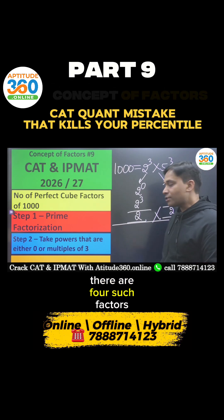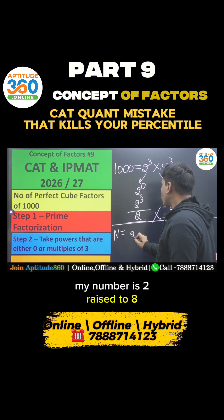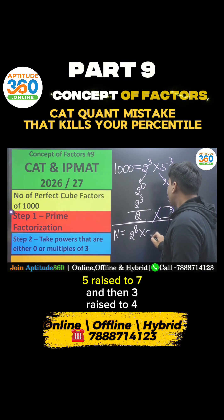Say I have got this number. My number is 2 raised to 8, 5 raised to 7, and then 3 raised to 4.